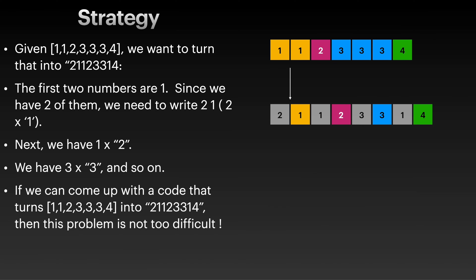So the strategy for this problem basically boils down to this: if you are given this number, we have - let's just call this an array of numbers, let's call this S. So we are given this array and we want to turn this into this.